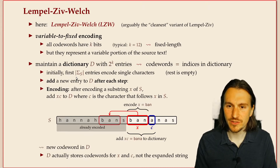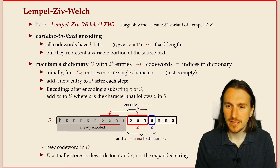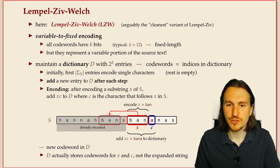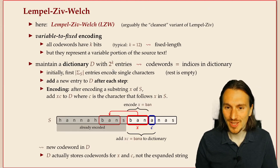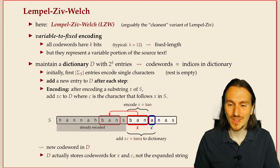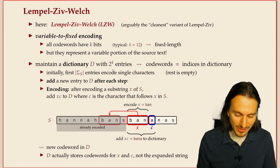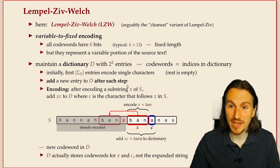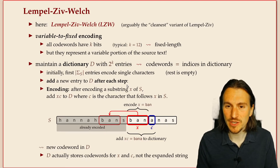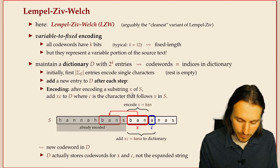All the other slots in the dictionary are reserved for phrases that depend on the text. To add new phrases in LZW, the rule is: whenever we encode a piece of the text, we also add a new phrase to the dictionary. Each time we encode one thing, we add one thing to the dictionary.